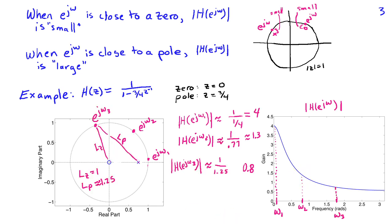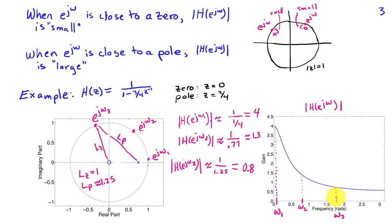Continuing and moving the frequency further, out at ω₃ the distance to the zero is still 1, but the distance to the pole has gotten further — now it exceeds 1. Suppose it's about 1.25, in which case |H(e^{jω₃})| is approximately 1 over 1.25, or about 0.8. And that's indeed what you see for ω₃, a little bigger than π/2 radians.